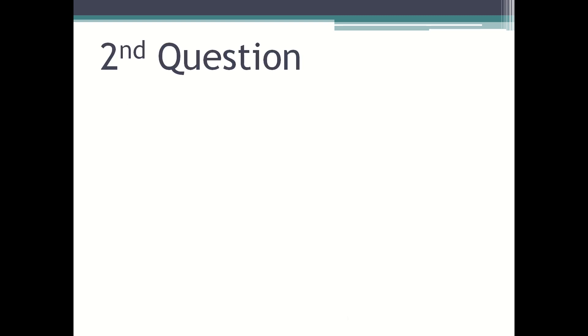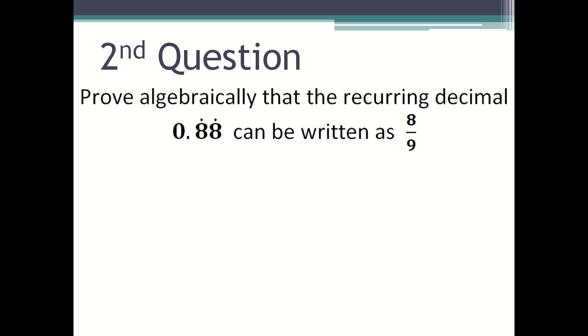The second type of question you could get is prove algebraically that the recurring decimal 0.88 recurring can be written as 8 over 9. Start with let x be equal to 0.888888, and then put a few of the pattern. Usually I put three pairs if it's in pairs, but if it's a single number then just put six of it, and you also have to put the dot dot dot to show that it's repeating.